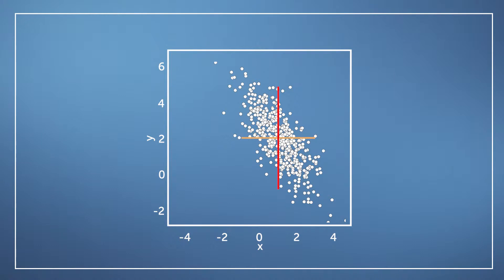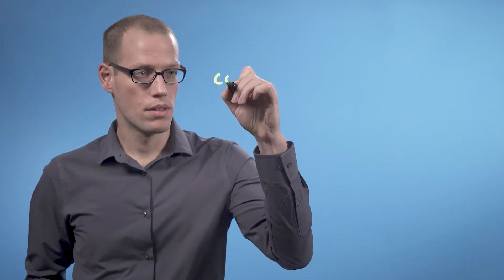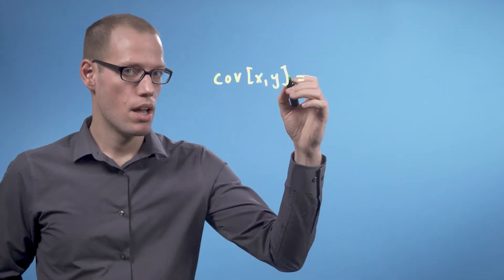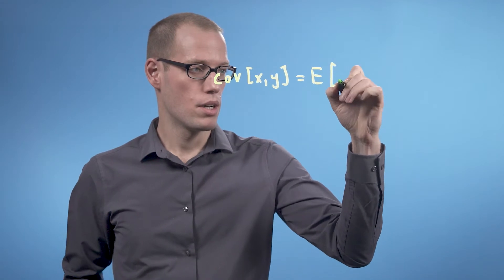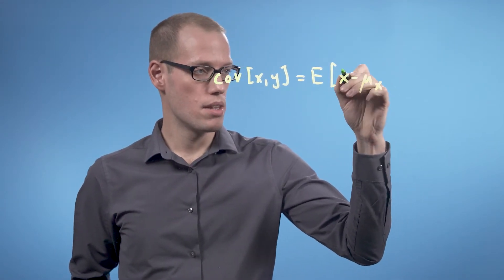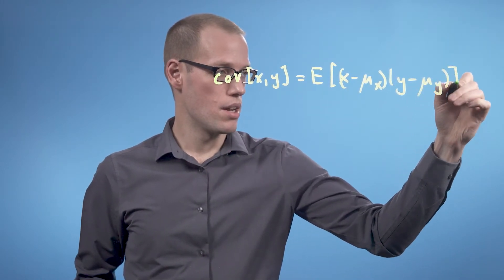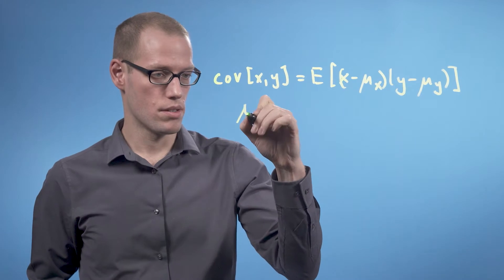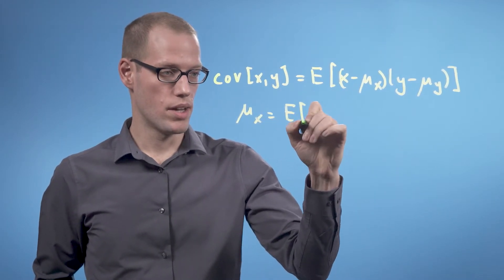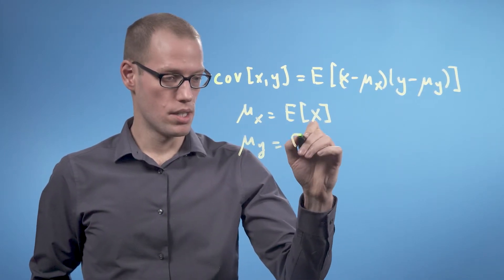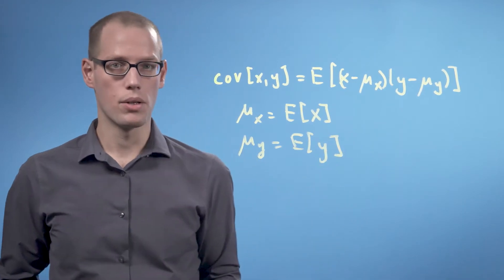This correlation can be captured by extending the notion of variance to what is called the covariance of the data. The covariance between x and y is defined as the expected value of (x minus mu_x) times (y minus mu_y), where mu_x is the expected value in the x-direction and mu_y is the expected value of the y-coordinates.